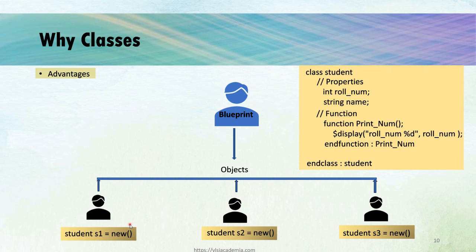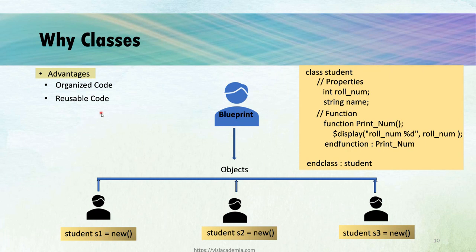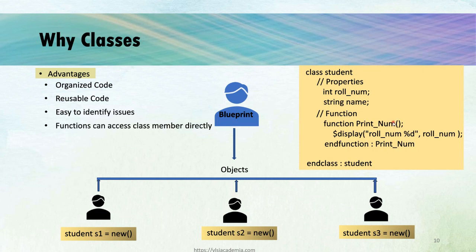Now let's see what are the advantages of classes. As we can see, all data and functions associated with student are at one single place, which makes our code very well organized. This is also called encapsulation in terms of OOP. We can create multiple objects for class student, which allows us to reuse our class structure, making our code reusable. Third, since the code is very well organized, it is very easy to identify bugs and fix them. Also, functions can directly access class members, unlike the traditional way. The other advantages are polymorphism and inheritance, which we will understand later in more detail.